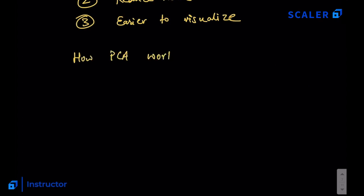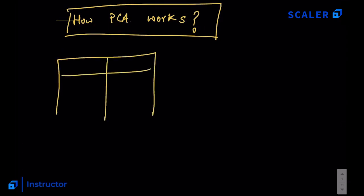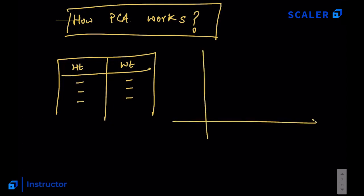Let's use a two-dimensional dataset which is easier to understand, and then we can scale our understanding to more variables. Let's say we have data of a few people — their height and weight. HT denotes height and WD denotes weight. If we plot them on a 2D scatter plot with weight on the x-axis and height on the y-axis, this is what our dataset actually looks like.